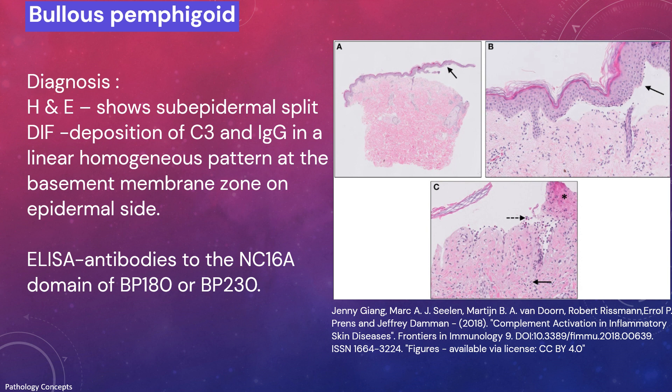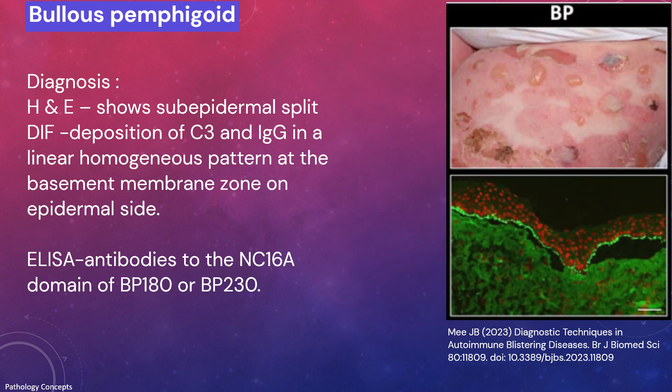Diagnosis of bullous pemphigoid is done by H&E, DIF, and ELISA. H&E shows sub-epidermal split with superficial perivascular inflammatory infiltrate and numerous eosinophils. DIF shows deposition of IgG or C3 in a linear homogeneous pattern at the basement membrane zone on the epidermal side. ELISA detects antibodies to the NC16A domain of BP-180 or BP-230.